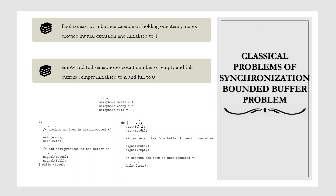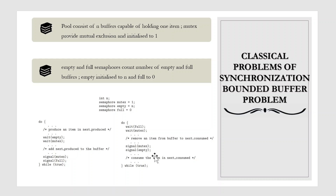In the case of the consumer process, first the wait operation is called on the full semaphore, so that value is decremented by 1. Then it calls wait on the mutex, and again the mutex value is set to 0. It removes an item from the buffer and places it in the next_consumed variable. Then it calls signal on the mutex, so the mutex value is again 1. Then it performs signal on empty, so the empty value is incremented by 1. And then it consumes the item that has been placed in next_consumed.